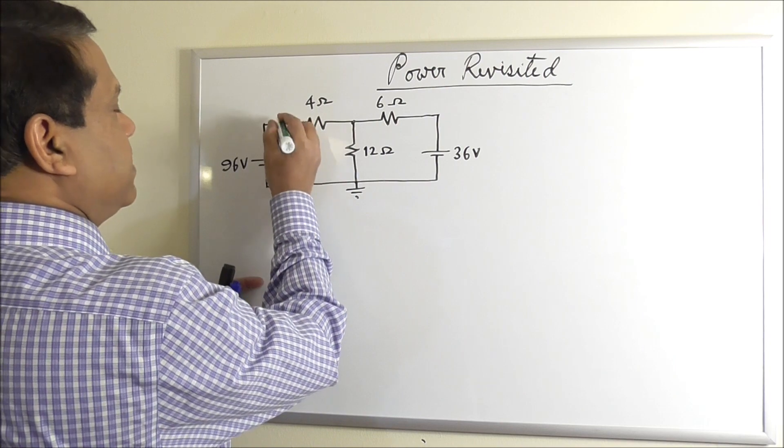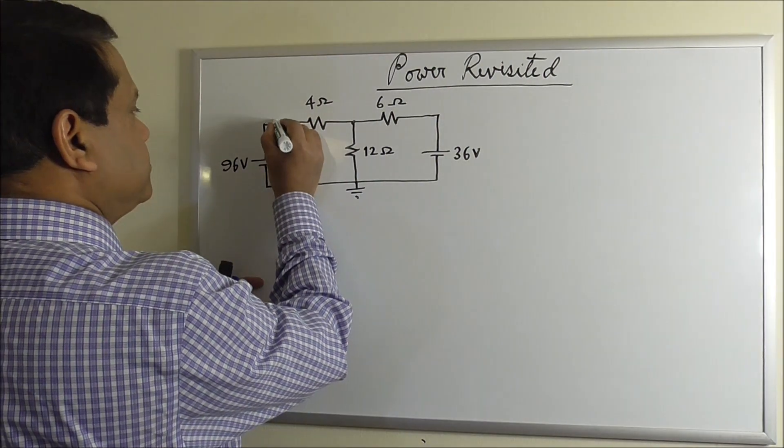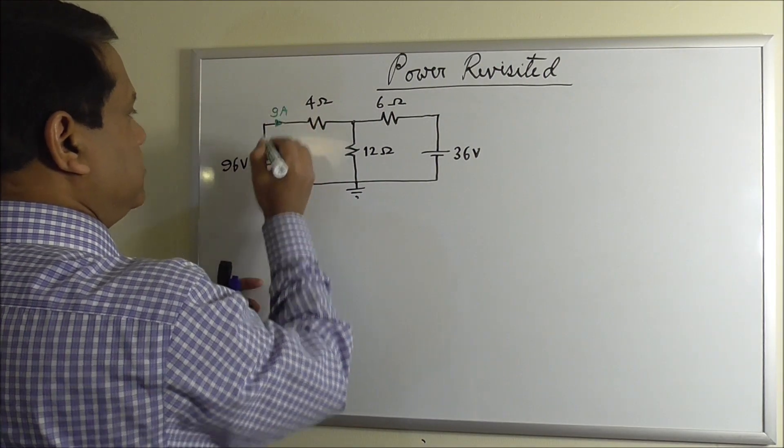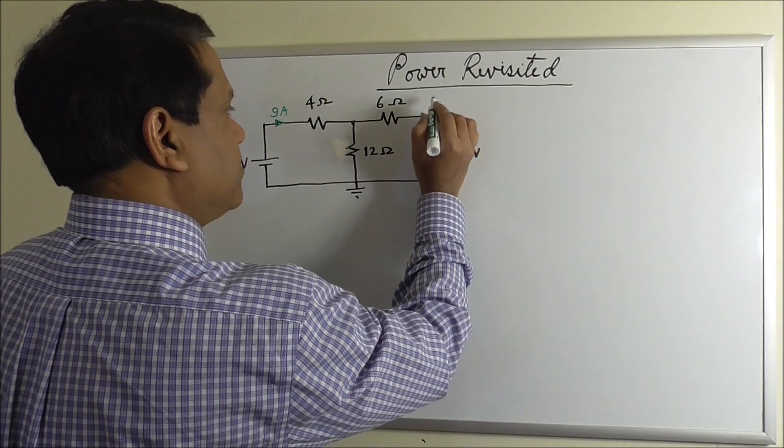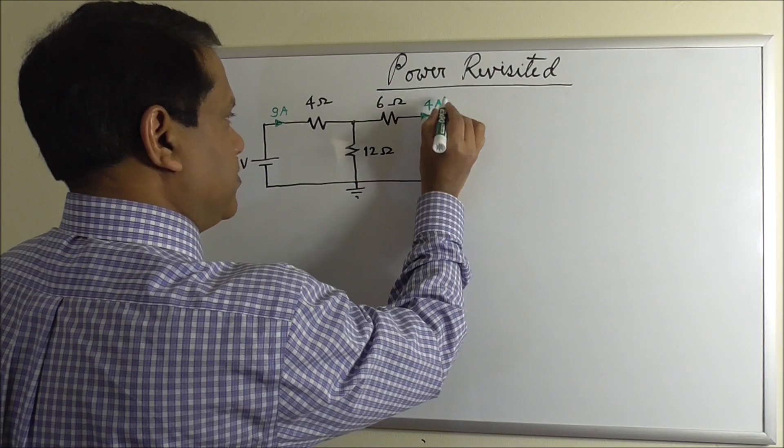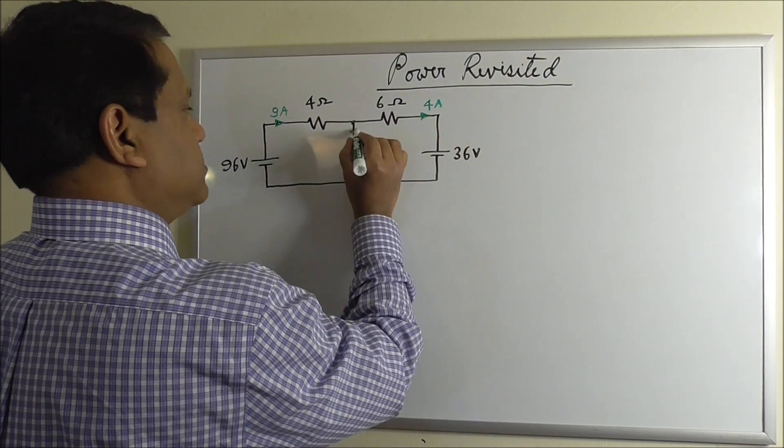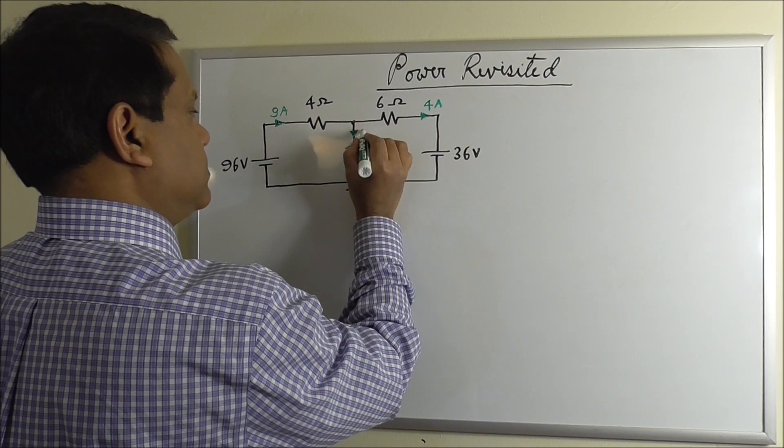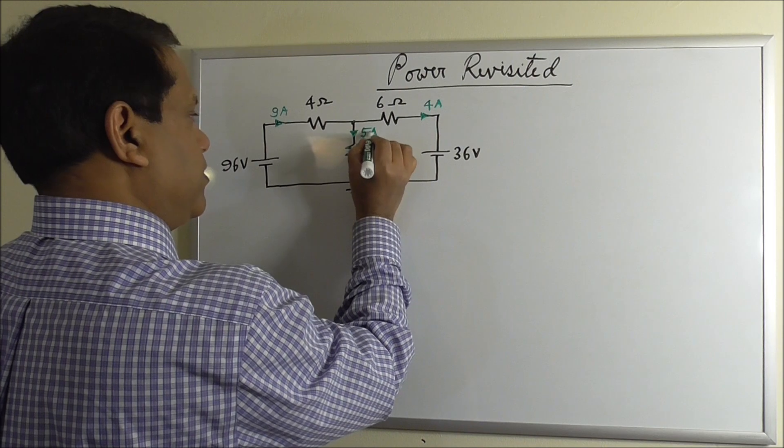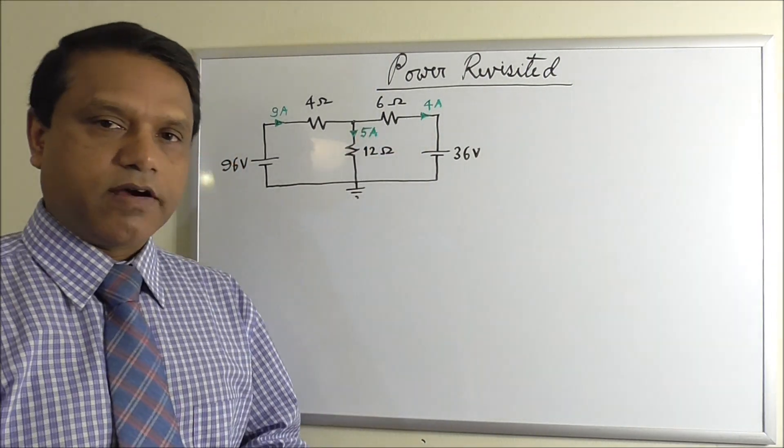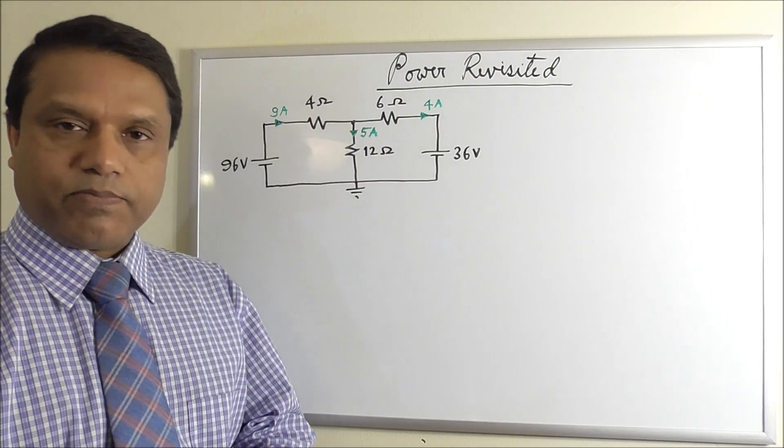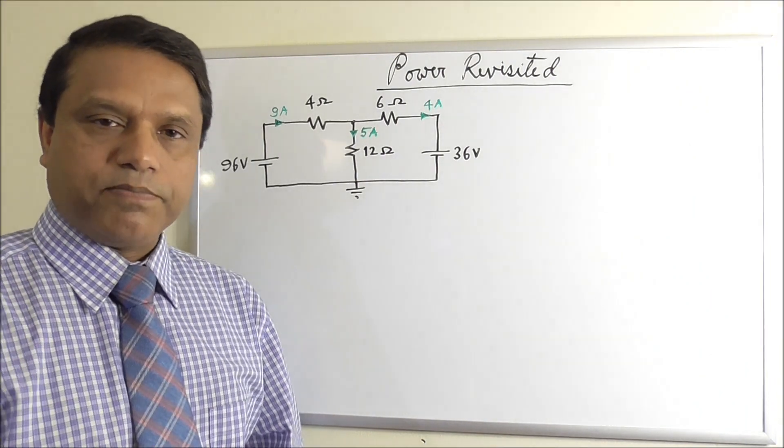This current is 9 ampere, this current is 4 ampere, and this current is 5 ampere. So in this video, we will just learn about the power supply and power consumption.